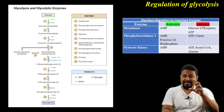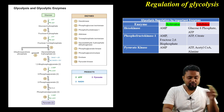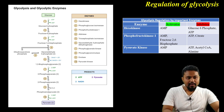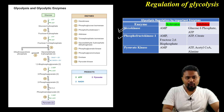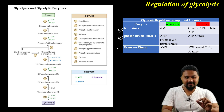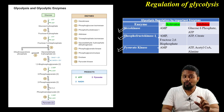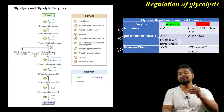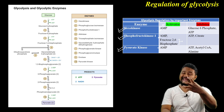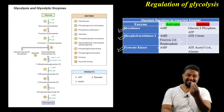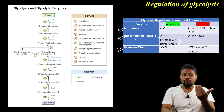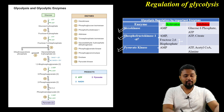To summarize, glycolysis regulation mainly occurs at three steps: the first step is hexokinase, the third step is phosphofructokinase-1, and the last step is pyruvate kinase. AMP acts as the activator of all three. For phosphofructokinase-1, fructose-2,6-bisphosphate is also an important activating molecule.